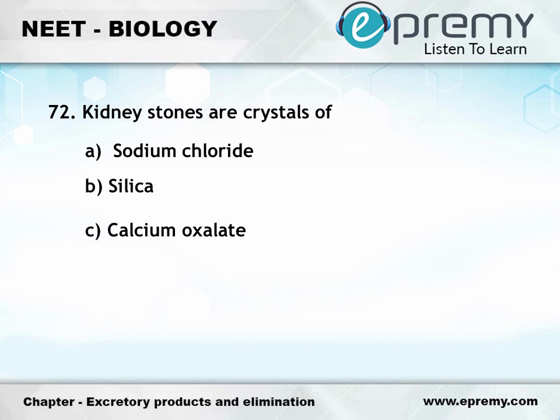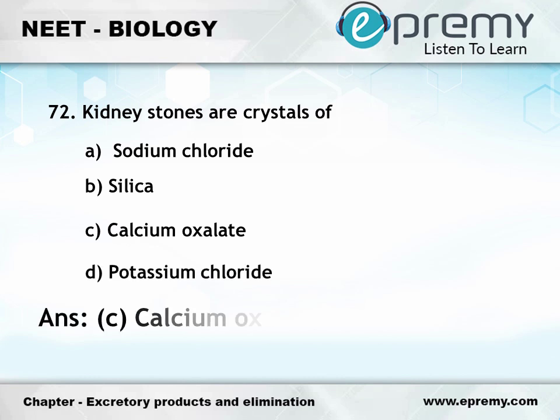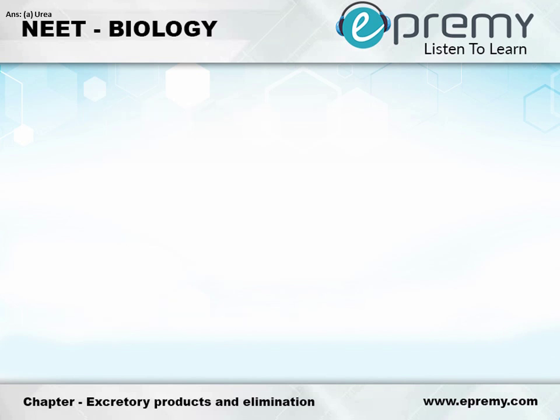Question number 72: Kidney stones are crystals of — Option A: Sodium chloride, Option B: Silica, Option C: Calcium oxalate, Option D: Potassium chloride. The answer is Option C: Calcium oxalate.